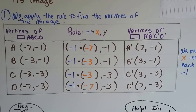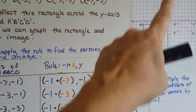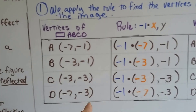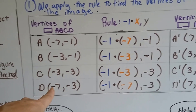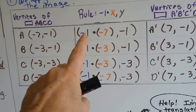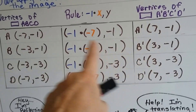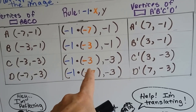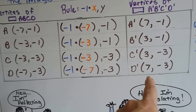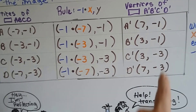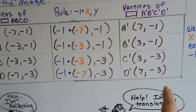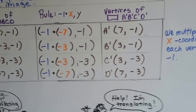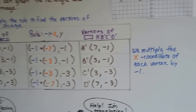The first thing we do is apply the rule to find the vertices of the image. Because we're going across the y-axis, we multiply the x by negative 1. The first number is the x and the second is the y, so the x-coordinates are the ones multiplied by negative 1. Negative 1 times negative 7 is positive 7 (a negative times a negative makes a positive). Negative 1 times negative 3 is positive 3, and again negative 1 times negative 7 is positive 7. Then we just copy the y-coordinates over for the image: negative 1, negative 1, negative 3, negative 3. Only the x got multiplied by negative 1.